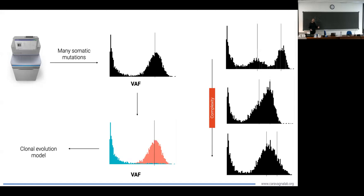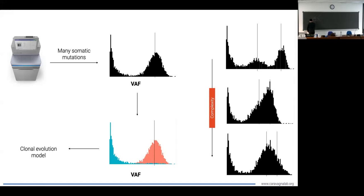We said things are more complicated — there is positive selection, there is negative selection, there is neutral evolution, and we're going to build on top of these concepts. The more important thing we said last time is that at the level of measurement in our data...